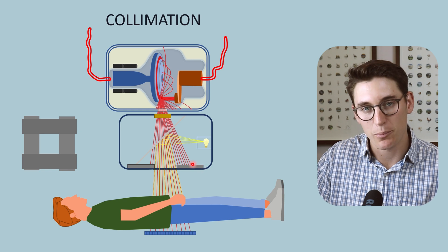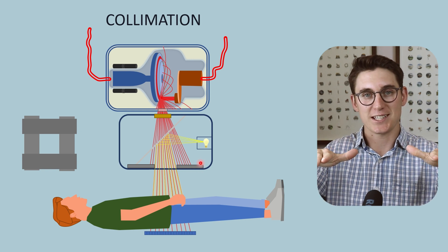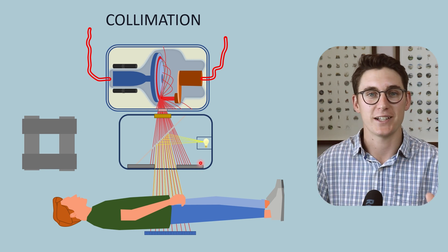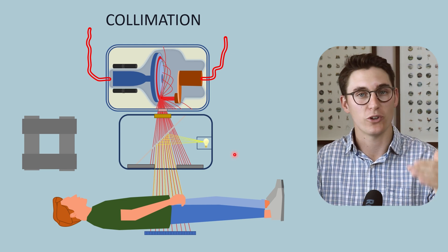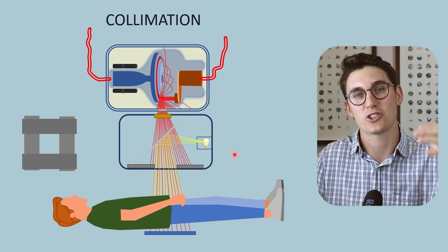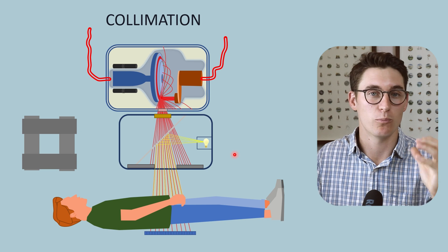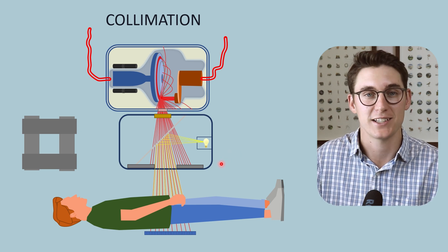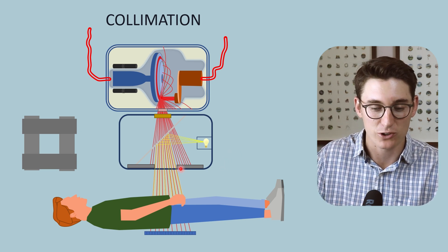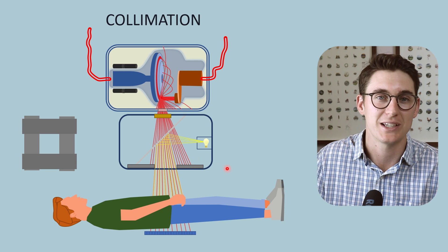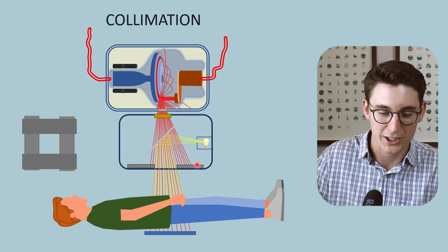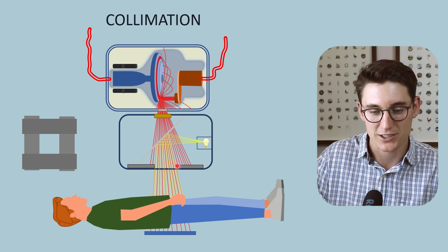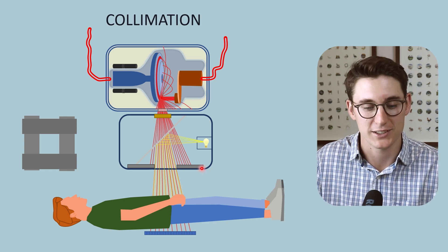The gray blocks within the collimator represent lead sheets that will attenuate our x-ray beam. Lead has a high atomic number, and as we saw with the photoelectric effect, the higher the atomic number, the more likely the photoelectric effect is to occur and the more likely those x-rays are to be attenuated. So these x-rays do not reach our patient because they are being attenuated by the lead collimator.